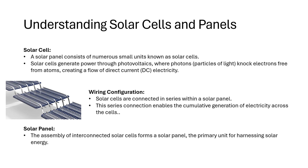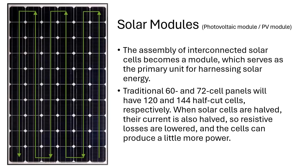The wiring configurations differ but are more or less the same. Solar cells are connected in series within a solar panel, as the picture is illustrating. This series connection enables the cumulative generation of electricity across the cells. A solar panel or solar module is the assembly of interconnected solar cells. If you have shading, you have problems, because if one cell goes off you lose the efficiency of the whole panel, since they're all connected in series.